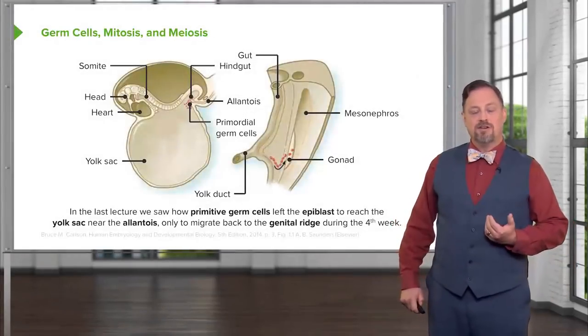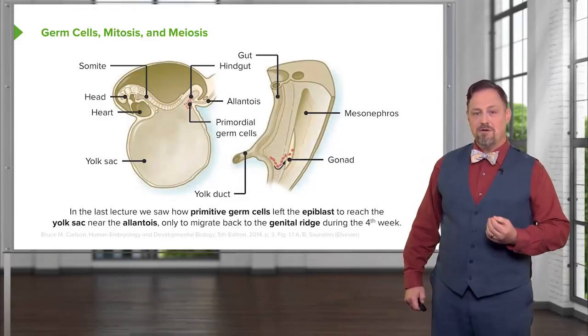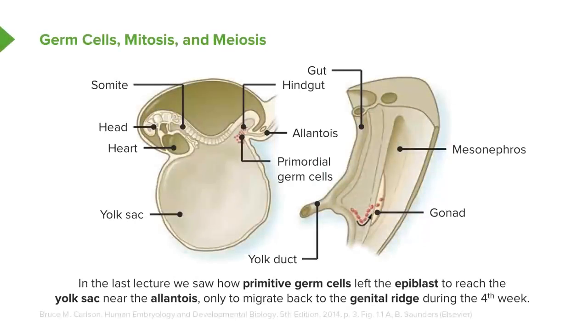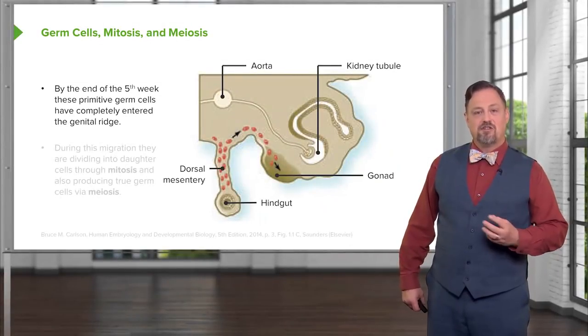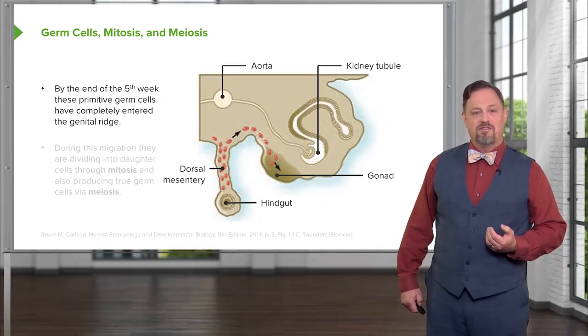During early development, we've already seen how the primordial or primitive germ cells migrated from the epiblast into the yolk sac and then, during the fourth week, migrate back along the allantois into the dorsal mesentery to reach the developing gonads in the genital ridge. By the end of the fifth week, they've entered the genital ridge and have associated with either the testes or ovary which will be developing there.